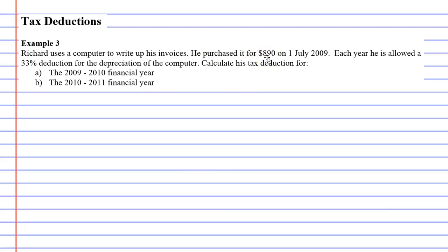So what we'll do is we'll start with question A. Question A is quite simple; it gets harder with question B. Question A wants you to calculate the tax deduction for the 2009 to 2010 financial year. That's just basically the next year, one year away.